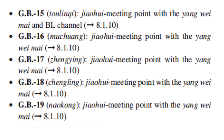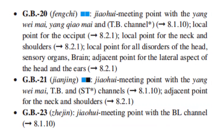GB15 is the Jiao Hui meeting point with the Yang Wei Mai and Bladder channel. GB16 and GB17 are Jiao Hui meeting points with the Yang Wei Mai. GB18 and GB19 are Jiao Hui meeting points with the Yang Wei Mai; GB19 also meets with the Triple Burner channel. GB20 is the local point for the occiput, neck, and shoulders, and for all disorders of the head, sensory organs, and brain. It is also the adjacent point for the lateral aspect of the head and ears. GB23 is the Jiao Hui meeting point with the Bladder channel.